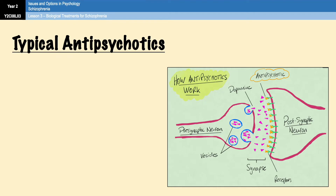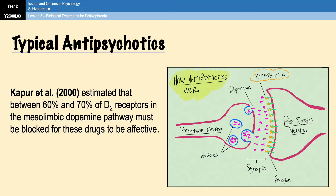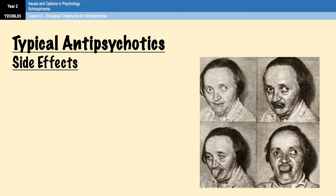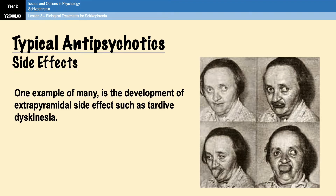A problem with blocking dopamine receptors in this way is that researchers suggested that around 60-70% of receptors in the mesolimbic dopamine pathway have to be blocked in order for the drugs to be effective. Unfortunately, in order to achieve that, a similar number of dopamine receptors in other areas of the brain also need to be blocked, which can lead to some undesirable side effects. For example, typical antipsychotics can produce something called tardive dyskinesia, which is an involuntary movement of the tongue, face, and jaw, as you can see in the picture on the right. This is what's known as an extrapyramidal side effect, because the drugs affect the dopamine pathways in the extrapyramidal areas of the brain, which is responsible for controlling motor activity.